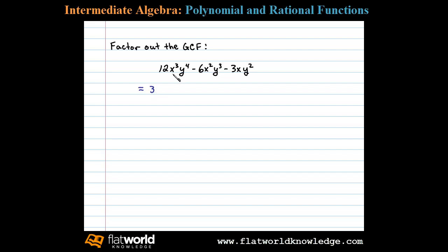Next we want to look for the smallest power of all the common variable factors. In this case we have x³, x², and x - we'll use x. We have y⁴, y³, and y² - we'll use y². That's our GCF. The GCF of the polynomial is 3xy².